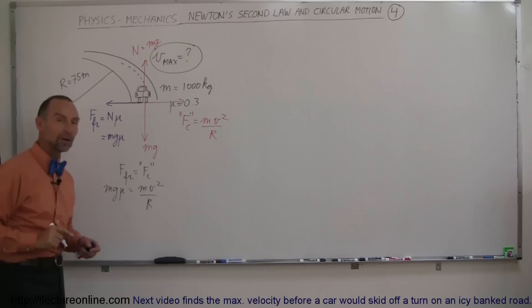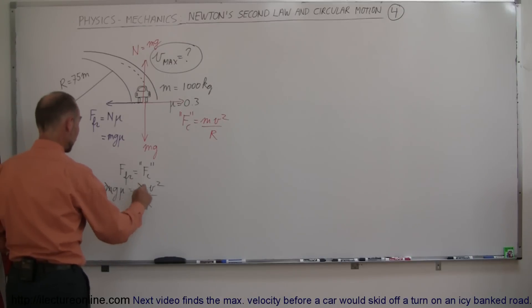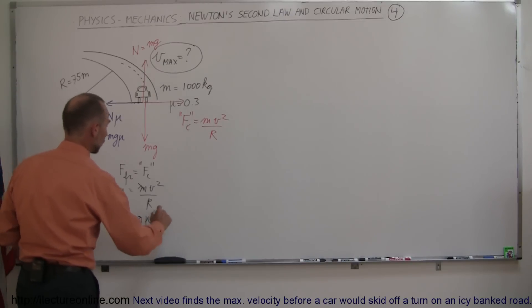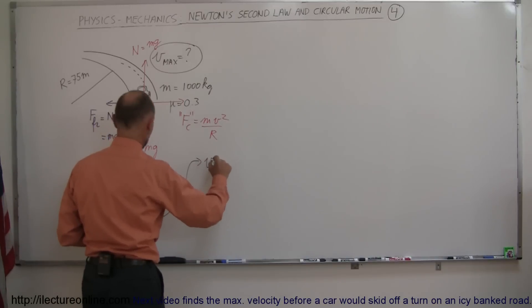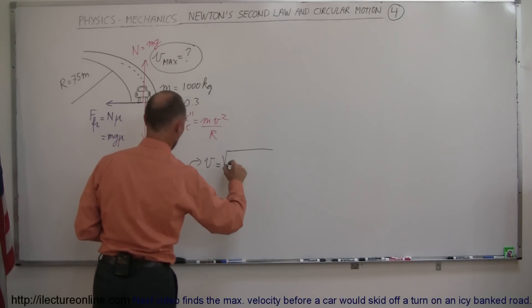And then we solve that equation for v. Notice that the mass cancels on both sides. Bring in the r over here and turn the equation around. We get v squared is equal to rg times mu, which means that the velocity cannot be any bigger than the square root of rg mu.